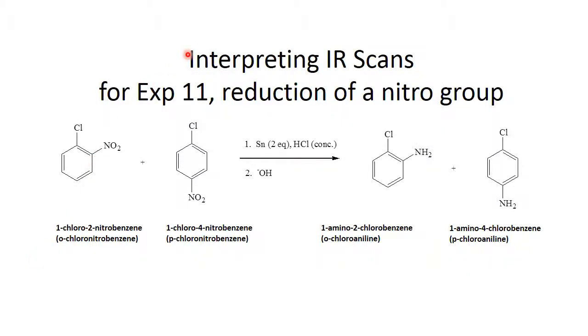Interpreting IR scans for experiment 11, the reduction of a nitro group. Here we're starting with a mixture of ortho-chloronitrobenzene and para-chloronitrobenzene and reducing them in the presence of tin and concentrated HCl followed by sodium hydroxide to the neutral amines ortho-chloroaniline and para-chloroaniline.